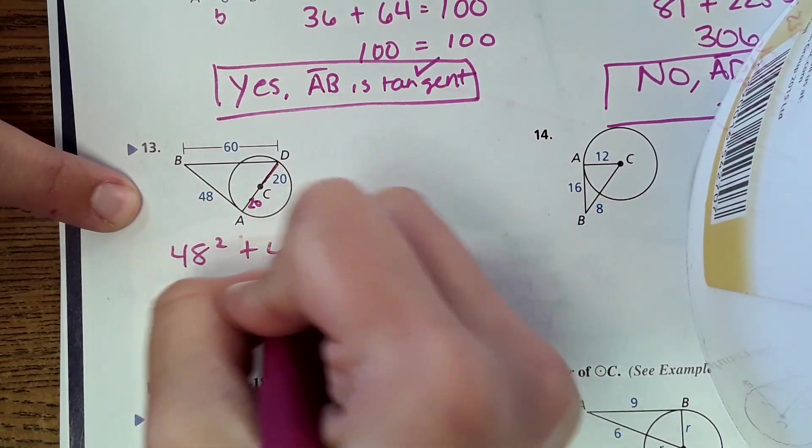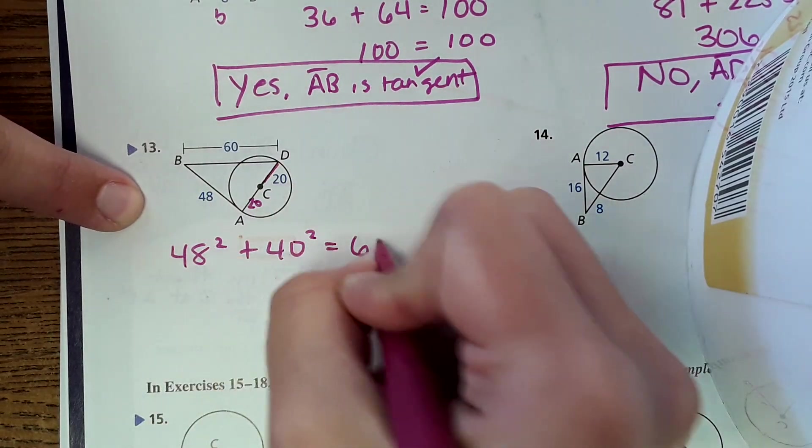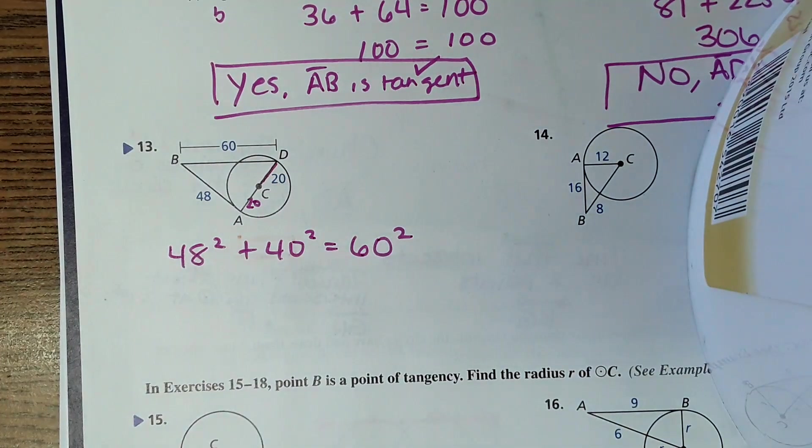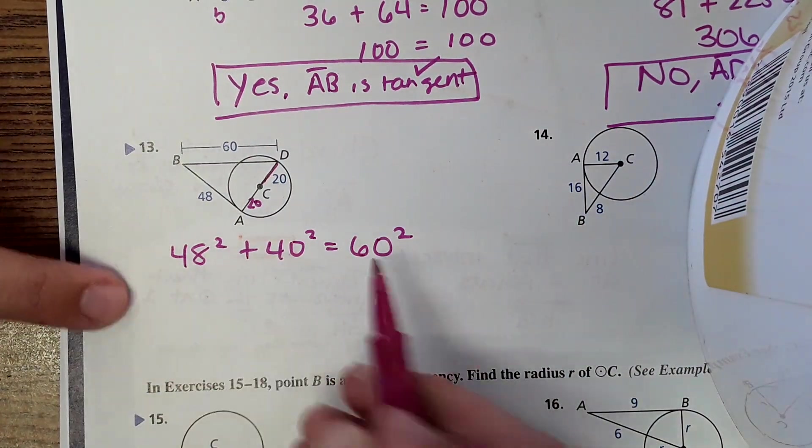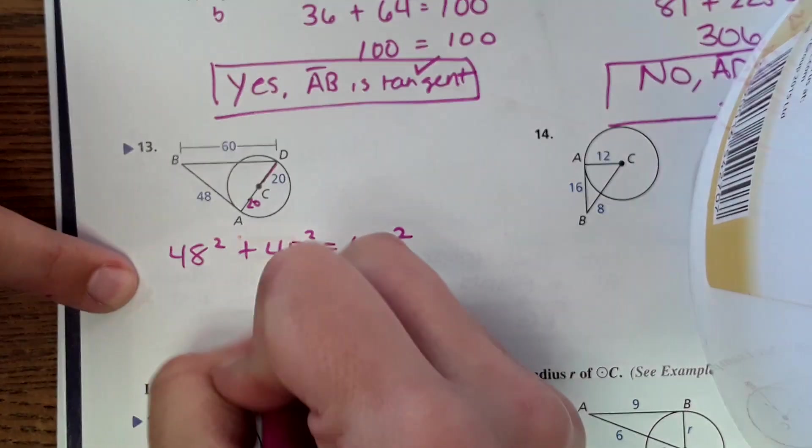And you would do 48 squared plus 40 squared, and then test it with 60 squared and see if it works. However, this does not equal, so this would be no.